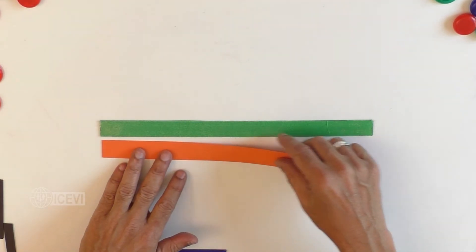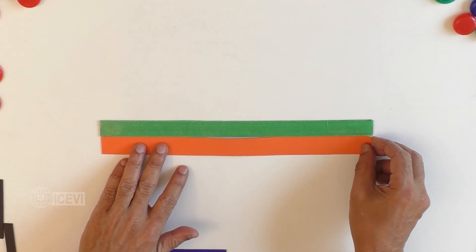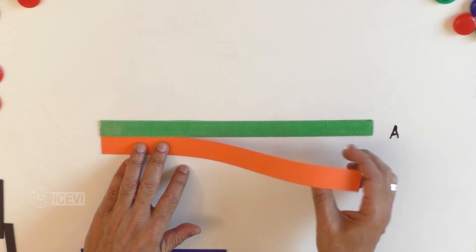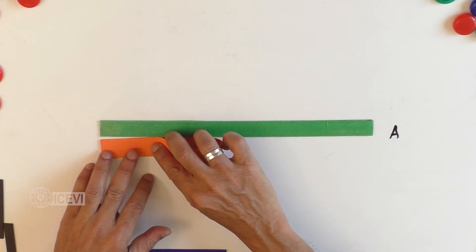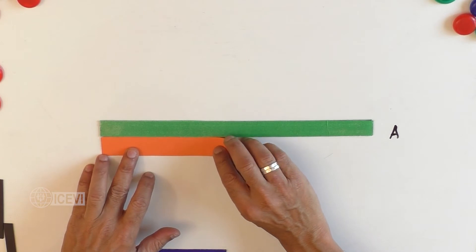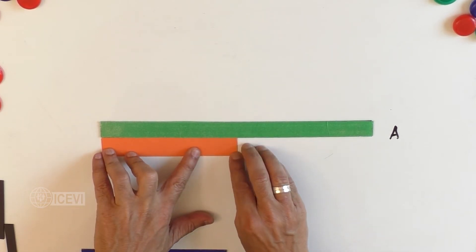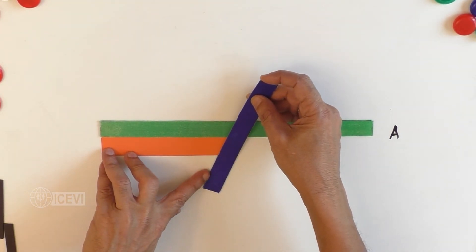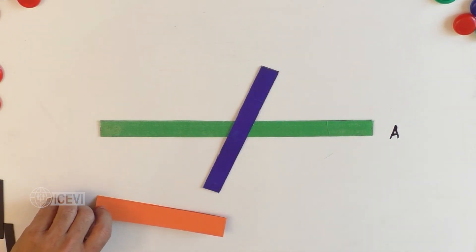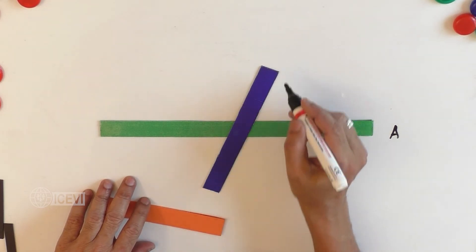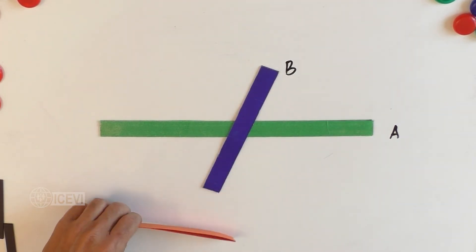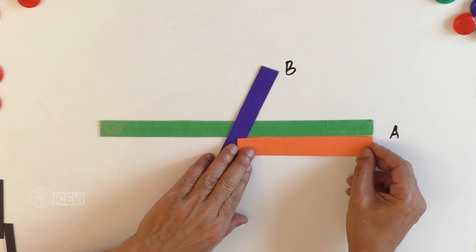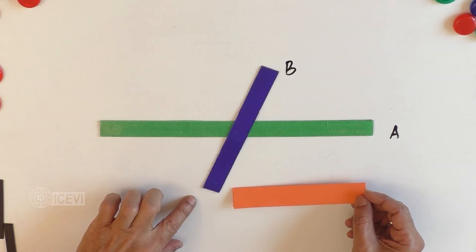Now let us measure line A and make it into two halves. Use a paper strip to measure line A and make it into two halves. Now let us take line B and let it go through the midpoint of line A. You can notice that line A is divided into two equal halves by line B.